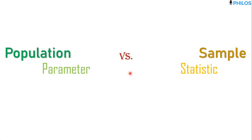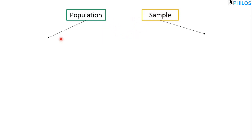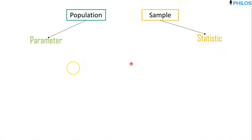So without wasting much time, let's start. Remember we said population refers to the entire group of interest, and then we said sample is the part or subset of the population. Now, a numerical measure that describes a population is known as a parameter, and the one that describes a sample is known as a statistic — without an S, statistic. Let's take an example so that you can understand this better.